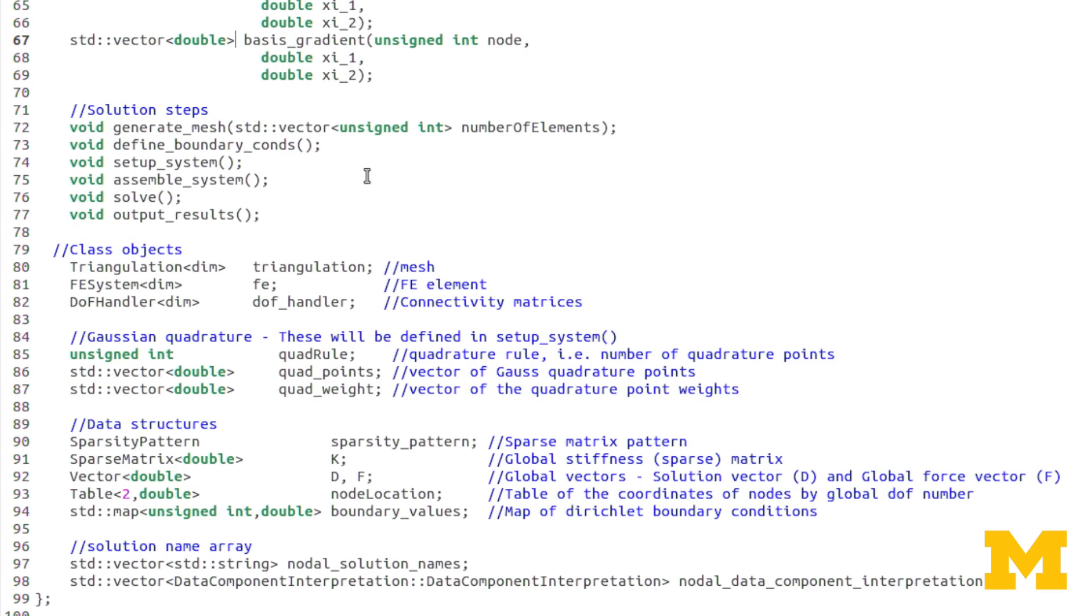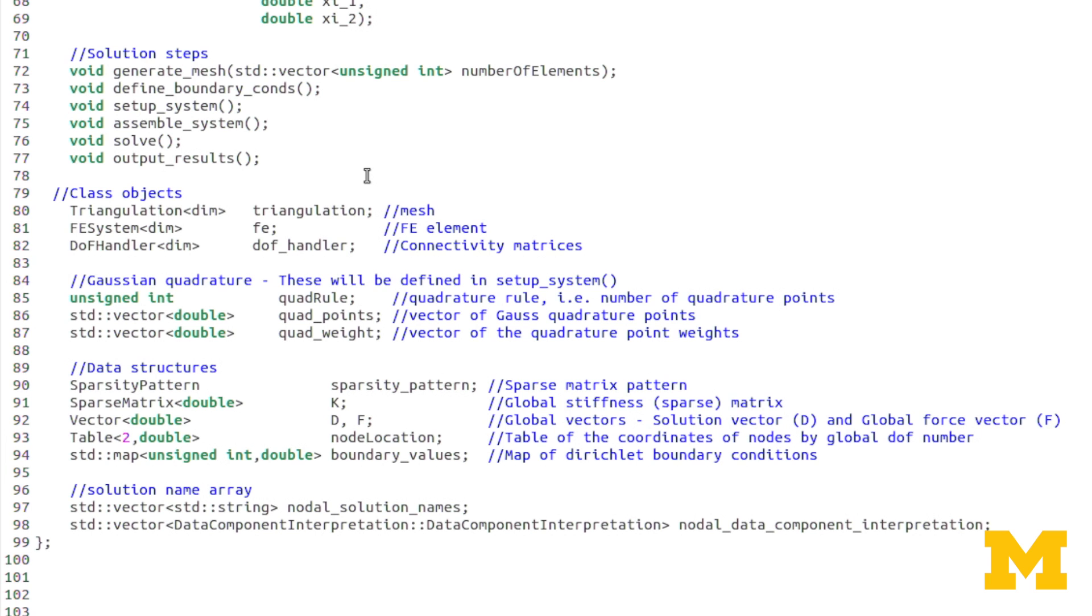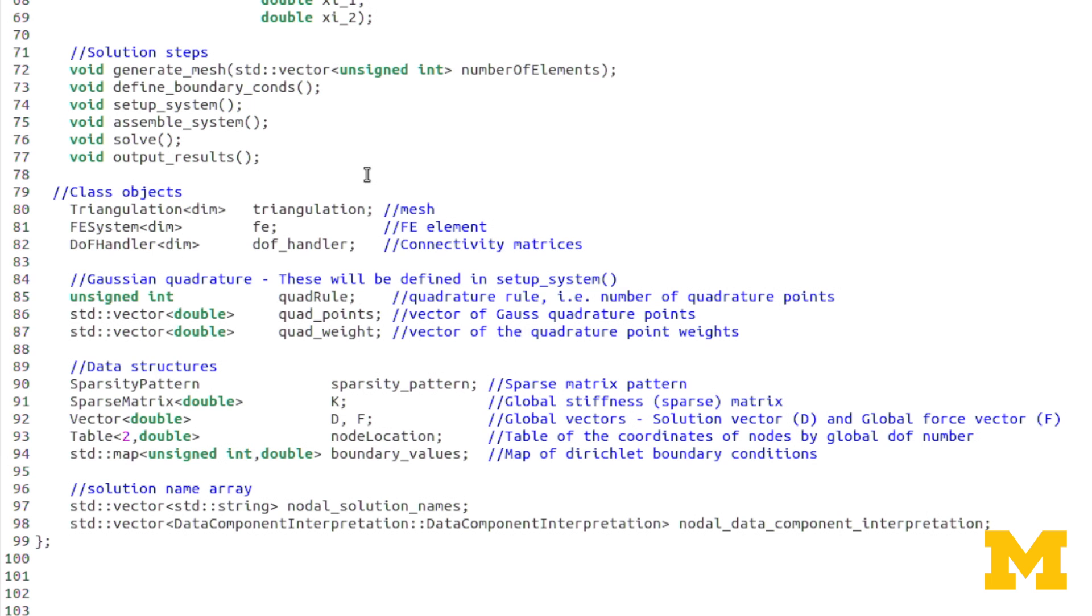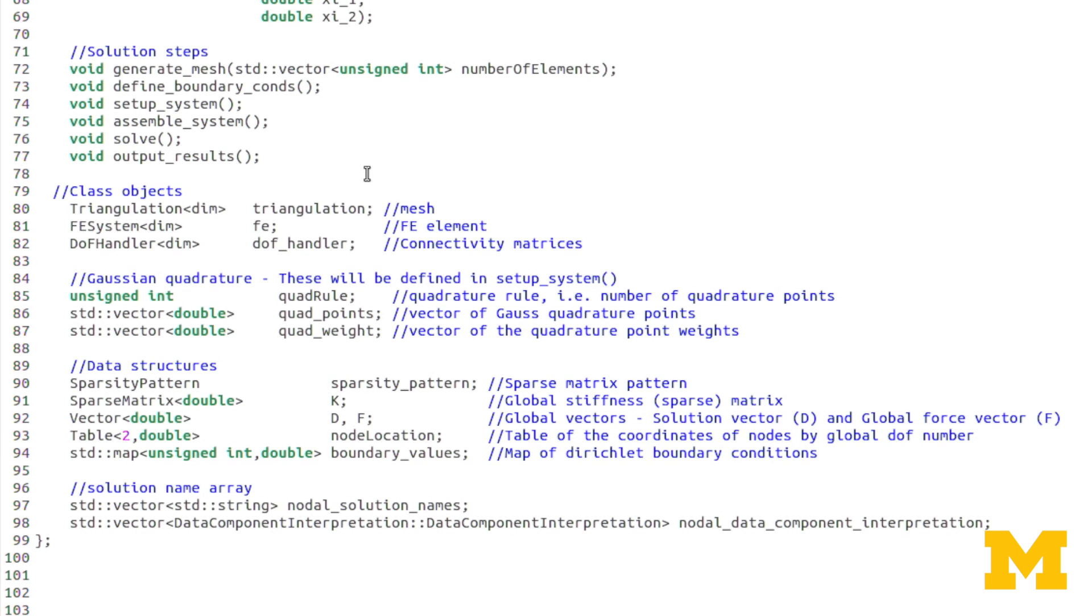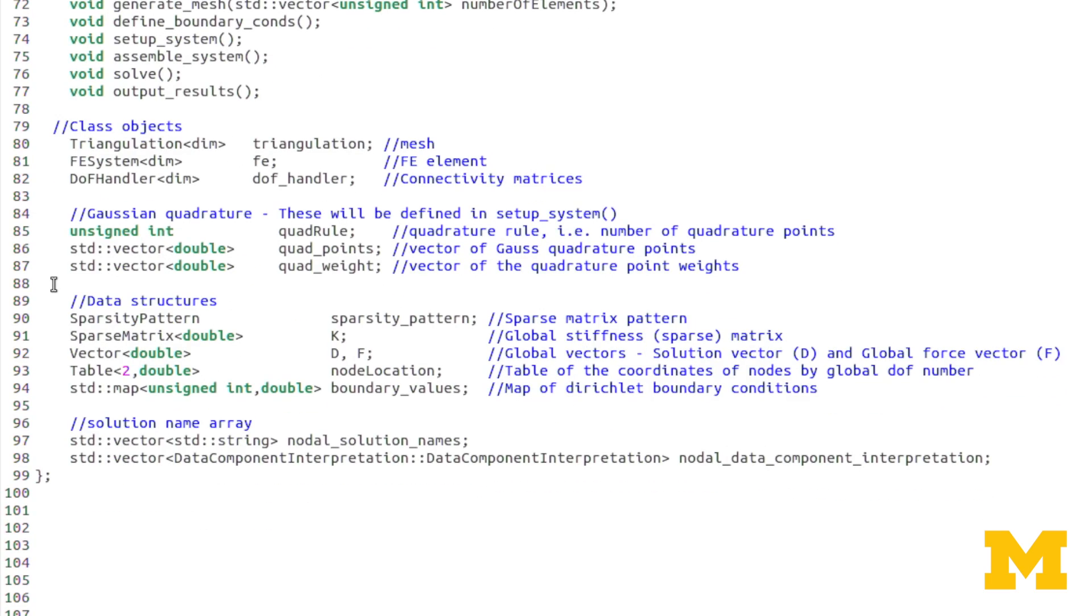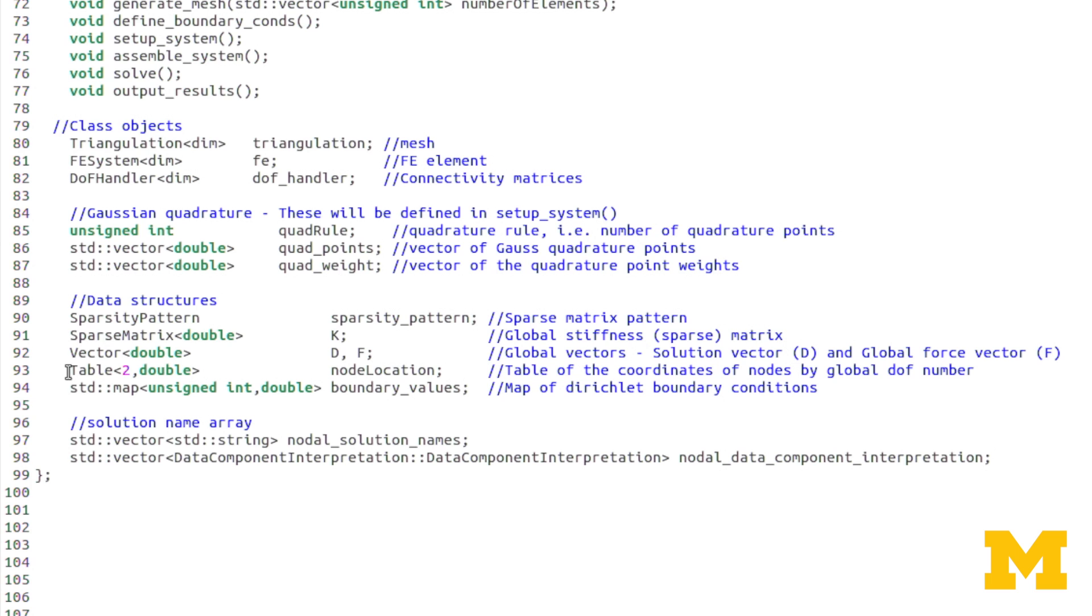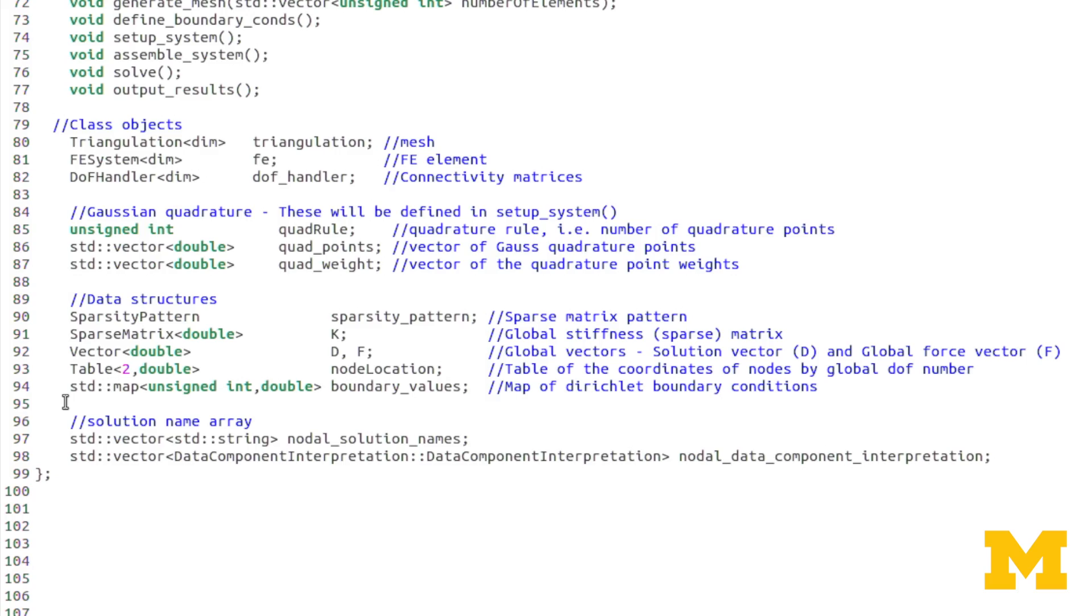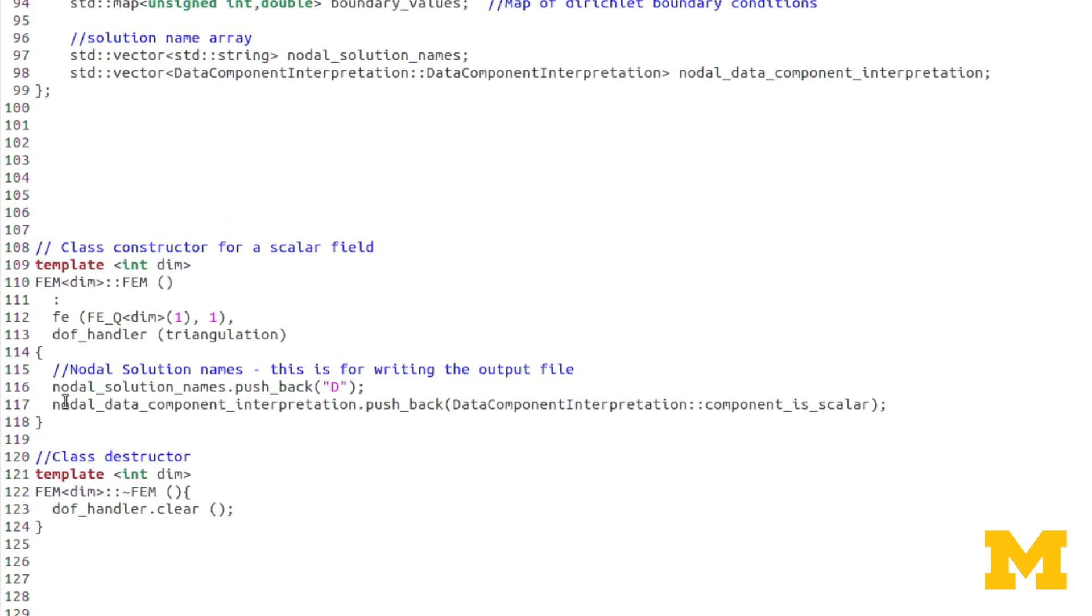The solution steps, however, are the same. Generate mesh, define boundary conditions, setup system, assemble system, solve, and output results. Except that generate mesh accepts as an input a vector of integers instead of just a single integer. The DL2 class objects are the same. The Gaussian quadrature rule is the same. All the data structures and solution names, those are all the same from in this assignment.